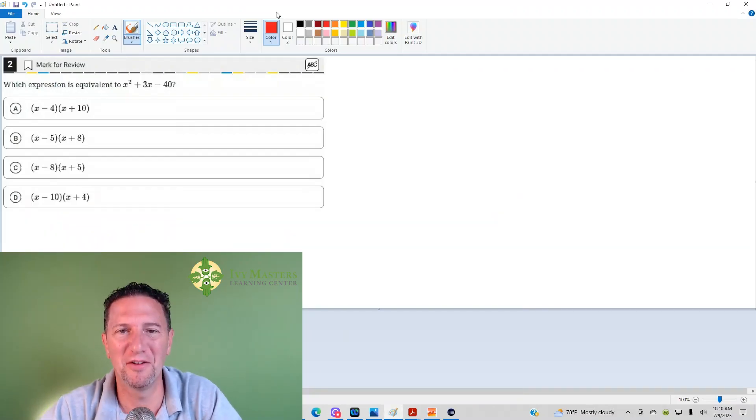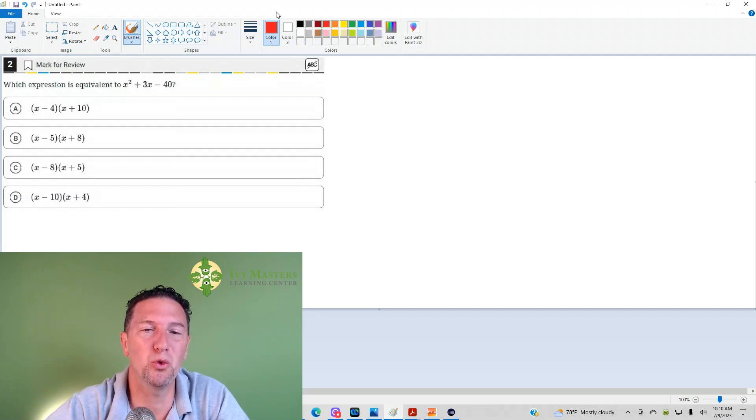Hi, I'm Paul Pasolka, Ivy Masters Learning Center at IvyMasters.com, and today we're going to look at Digital SAT Test 1, module 1, number 2 from the Blue Book app. Number 2 reads, which expression is equivalent to x squared plus 3x minus 40?